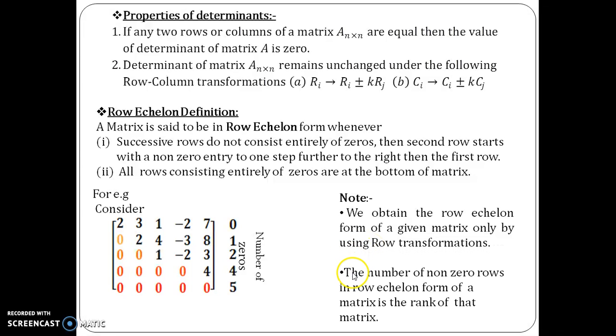The next one, very important: the number of non-zero rows in row echelon form of a matrix is the rank of that matrix. So, here if you focus on this matrix, the number of non-zero rows is 4—1st, 2nd, 3rd and the 4th. There are 4 non-zero rows, so the rank of this 5×5 matrix is 4. So, this is one brushing up of your row echelon concept along with the rank of the matrix.